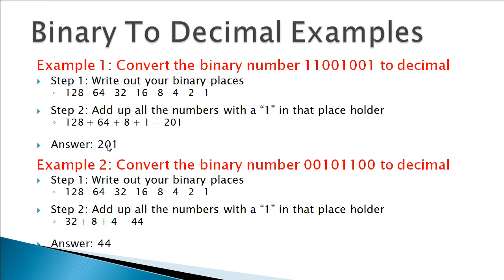Same number, just two different ways to communicate it — one in a base-2 numbering system, one in base 10. Let's look at 00101100. Breaking it into places, we have a 1 in the 32s place, a 1 in the 8s place, and a 1 in the 4s place. Add those up and you get 44.